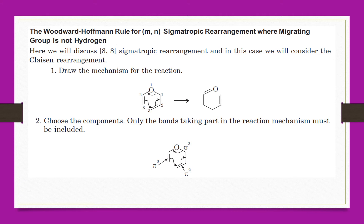We are considering the Claisen rearrangement. The first step is to draw the mechanism for the reaction. For the 3-3 rearrangement, the 3-3 side will form a sigma bond and the 1-1 place will break. The double bond will shift towards the oxygen.